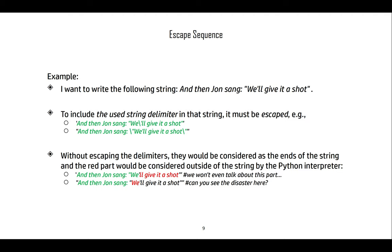So say I want to write the following string inside Python: and then John sang will give it a shot. Now what I need is to include in that string the escape sequences to encode the delimiters. If we start the string with a single quotation mark, then single quotation marks inside the string have to be escaped. If we start the string with a double quotation mark, then double quotation marks inside the string need to be escaped. This is going to tell Python I want to have a quotation mark inside the string, not use this quotation mark as the end of the string.